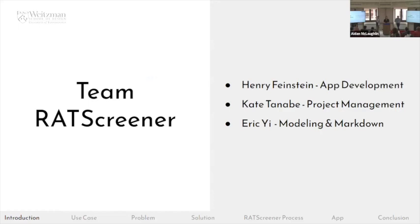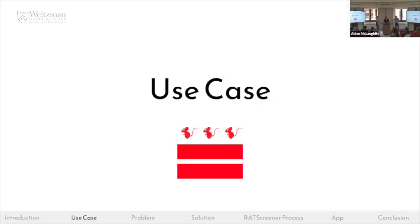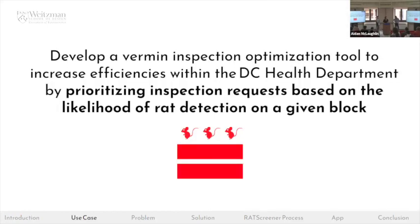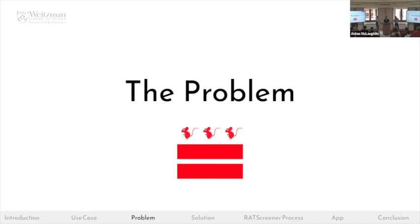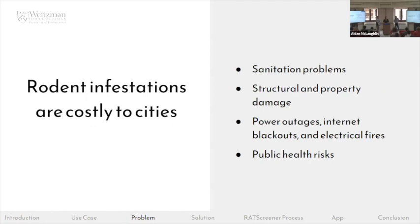Our team: Henry has been leading app development, I work on the project management side, and Eric has been leading modeling and markdown. Our aim is to develop a vermin inspection optimization tool that increases efficiencies within the DC Health Department by prioritizing inspection requests based on the likelihood of rat detection on a given block. Rodents thrive in cities and infestations can be really costly to local governments.